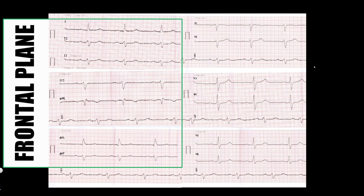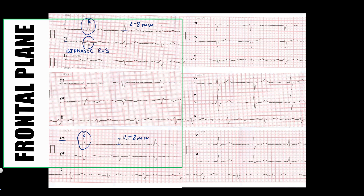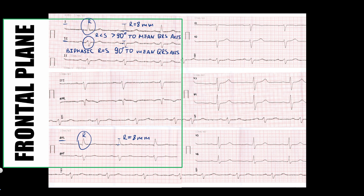Limb leads are positioned in the frontal plane. For QRS axis estimation, we need to find the limb lead with the highest R-wave. In this case, the high R-wave is in the first standard lead and AVL — both equal 8 mm. The next step is to find the lead with a biphasic or near-biphasic complex. If the R-wave amplitude equals the S-wave amplitude, the QRS is called biphasic, and that lead is oriented at a 90-degree angle to the mean QRS axis. In our case, this is the second standard lead, where R-wave is 3.5 mm and S-wave is 4.5 mm. When R-wave is smaller than S-wave, the mean QRS axis is oriented more than 90 degrees to the lead with the biphasic complex.